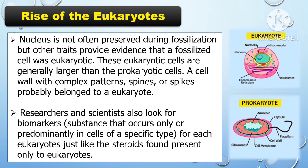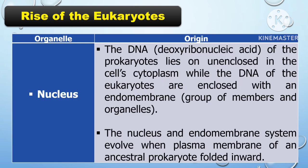The nucleus is not often preserved during fossilization, but other traits provide evidence that a fossilized cell was eukaryotic. Eukaryotic cells are generally larger than prokaryotic cells. A cell wall with complex patterns, spines, or spikes probably belongs to a eukaryote. Researchers and scientists also look for biomarkers — a substance that occurs only or predominantly in cells of a specific type — such as steroids, found present only in eukaryotes.